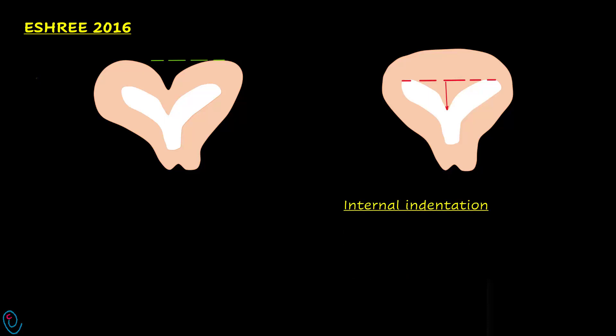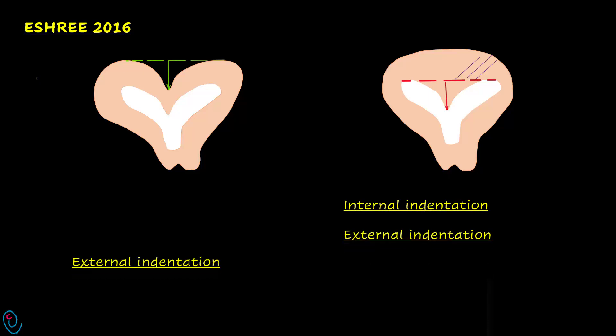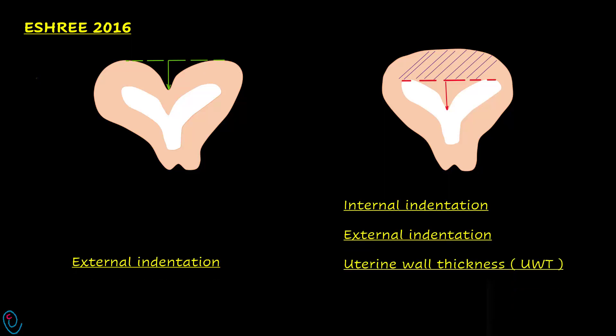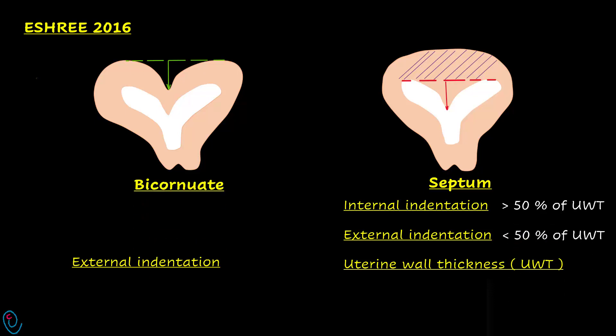In the ESHRE 2016 criteria, we measure internal indentation, external indentation, and uterine wall thickness — which is the thickness above the inter-ostial line. The diagnosis is uterine septum if internal indentation is more than 50% of uterine wall thickness. The diagnosis is bicornuate uterus if external indentation is more than 50% of uterine wall thickness.